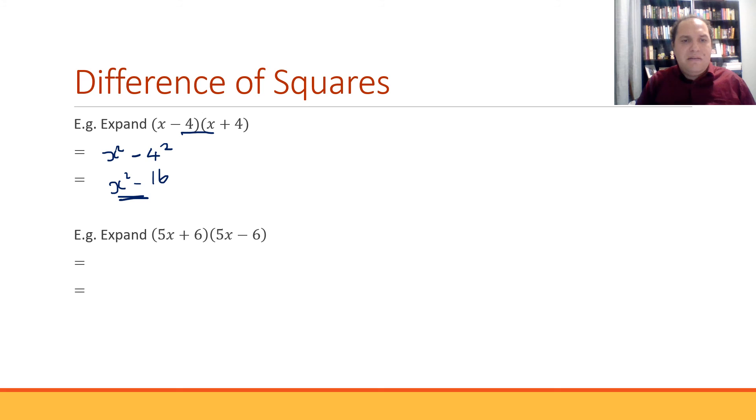Looking at the second one, again, we've got the same sort of pattern. We've got 5x plus 6 and 5x minus 6. They're the same expressions, just ones plus ones minus. So that's our difference of squares rule. We can just use our difference of squares rule to expand that one out. So it ends up being 5x squared minus 6 squared. 5x squared: 5 squared is 25, x squared is just x squared. 6 squared is 36. And there's your expansion. And that's all there is to it.